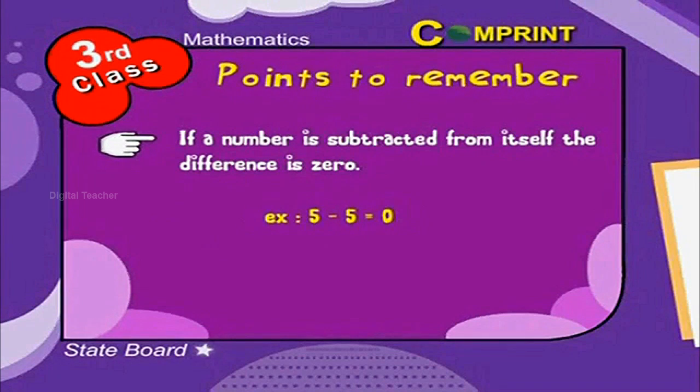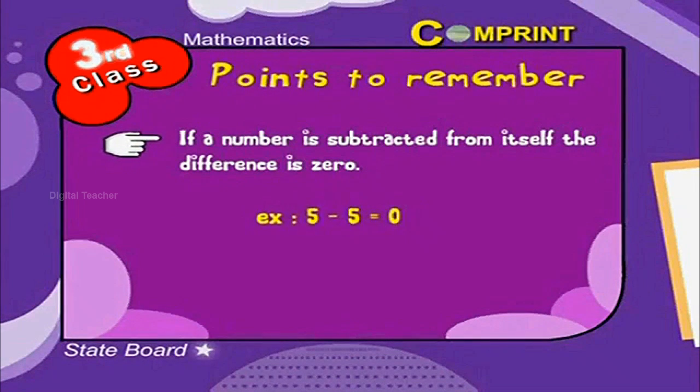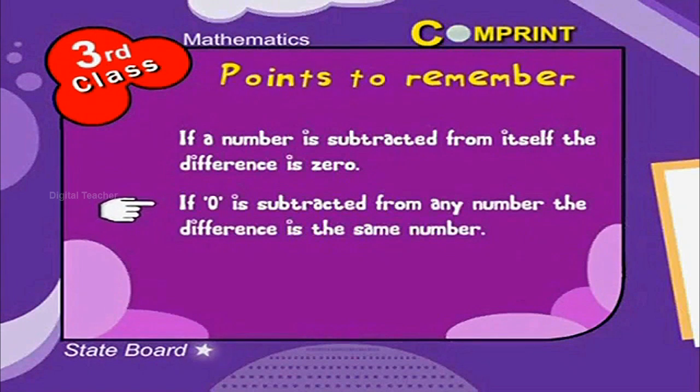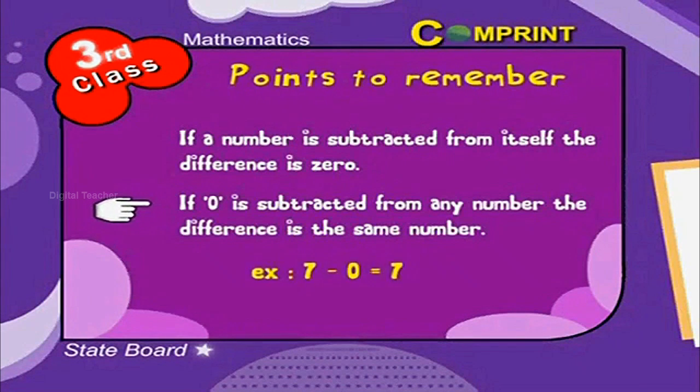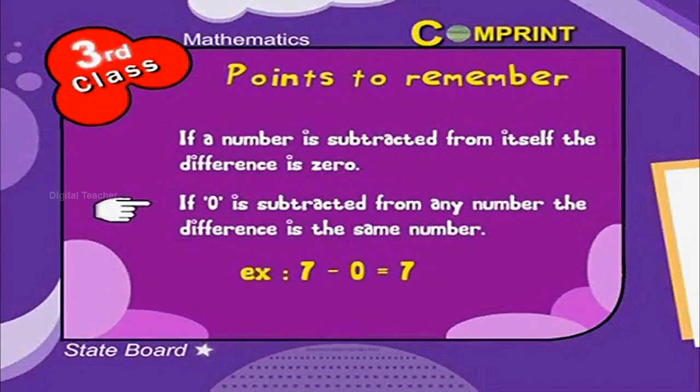For example, 5 minus 5 is equal to 0. If 0 is subtracted from any number, the difference is the same number. For example, 7 minus 0 is equal to 7.